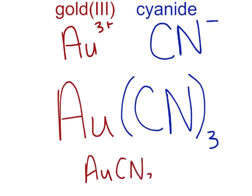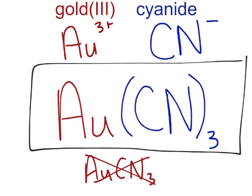If I wrote AuCN₃ like this, well, I don't have 3 cyanides then. I have 3 nitrogens and only 1 carbon.